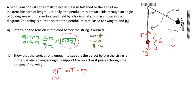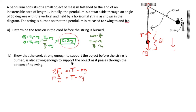Newton's second law lets us replace net force with MA. The type of acceleration here is centripetal, because this is a pendulum with radius L. So MA becomes MAC, the centripetal acceleration, equal to T minus Mg. Substituting the definition of centripetal acceleration, V squared over R — or V squared over L — we have M times V squared over L equals T minus Mg. We know mass, gravity, and length L, but we don't know the tension T or the velocity V at this point. The easiest way to get that velocity is by using conservation of energy.